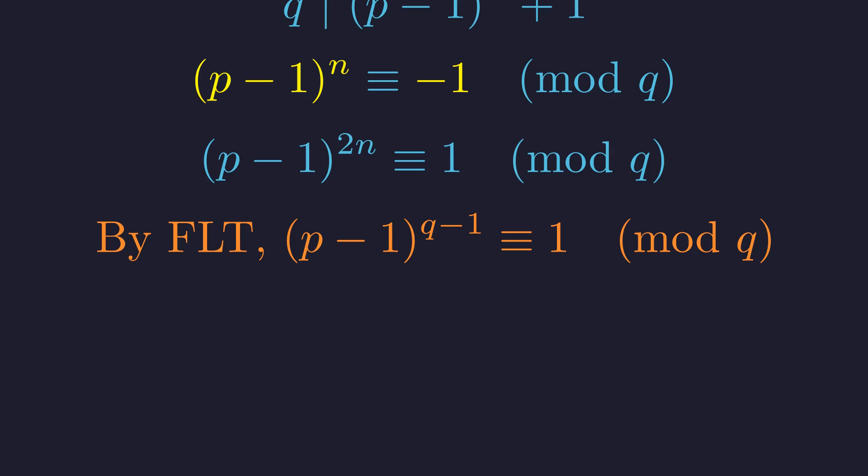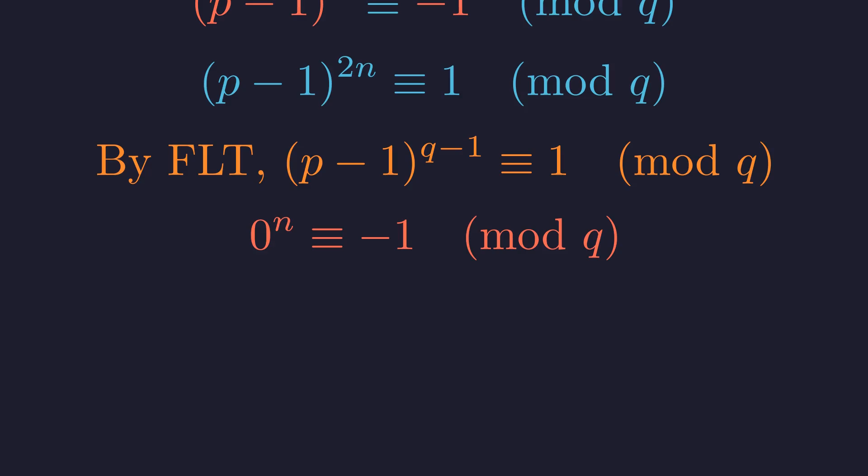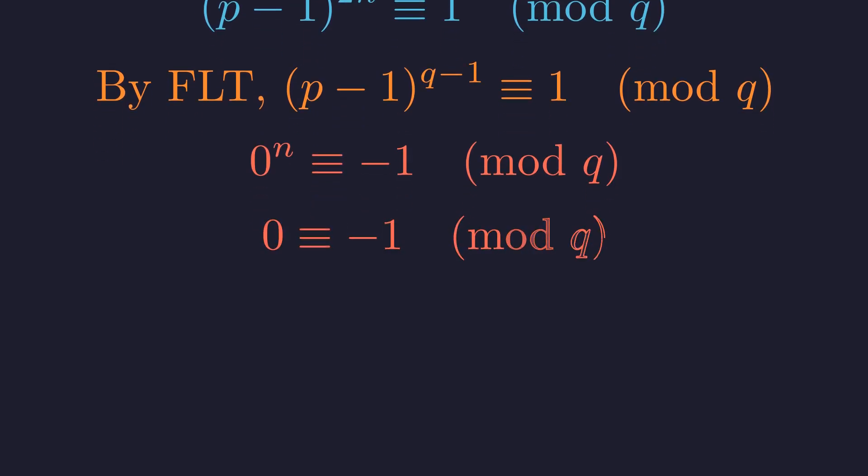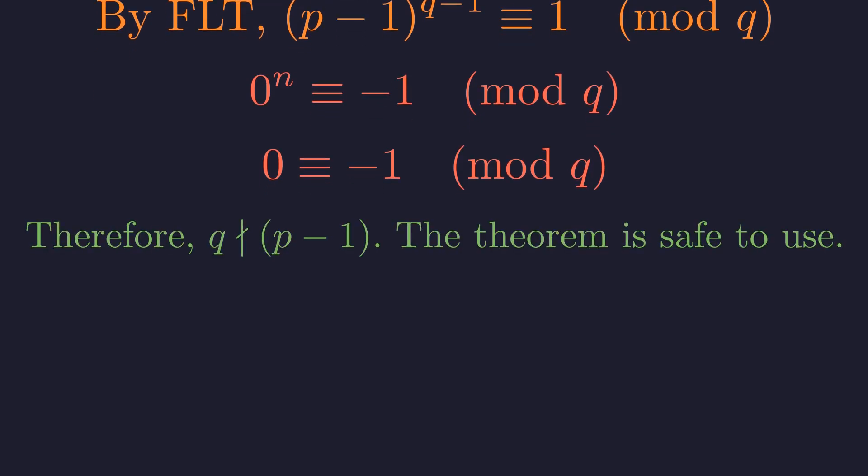If q does not divide p-1, this congruence holds. Let's assume, for contradiction, that q does divide p-1. Then p-1 ≡ 0 (mod q). Substituting this into our original congruence leads to 0^n ≡ -1 (mod q). This implies that q must divide 1, but q is a prime number, so this is impossible. Therefore, our assumption was false, and q does not divide p-1. The theorem can be safely applied.